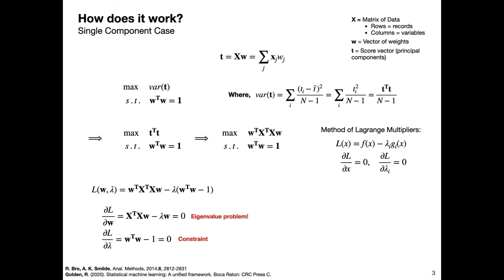This is the exciting part: this first equation, if we rearrange it, is just an eigenvalue problem, which is a standard problem in linear algebra, and then the second equation is just a restatement of our original constraint.